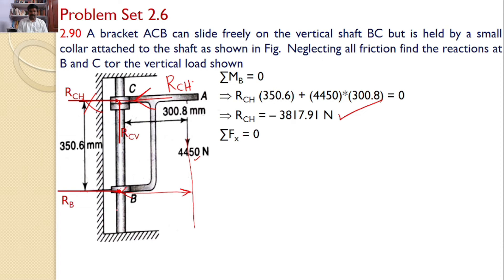Now, by considering the equilibrium equation sigma Fx is equal to 0. Now, RCH and RB both are acting in the same direction. Hence, RCH plus RB is equal to 0 and RCH I am substituting the actual value minus 3817.91 plus RB is equal to 0.